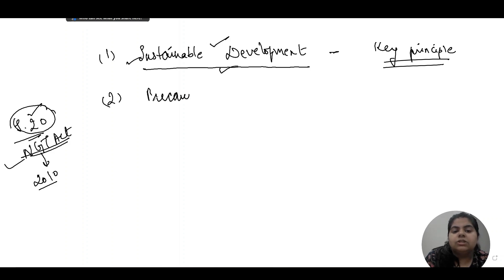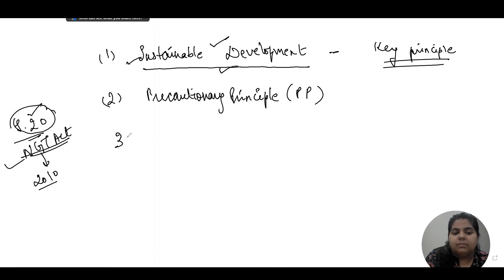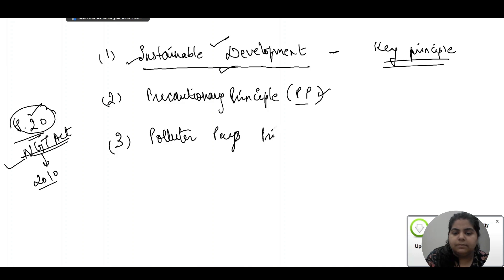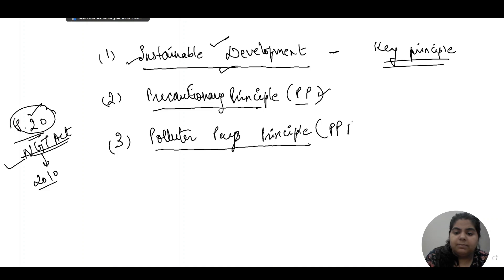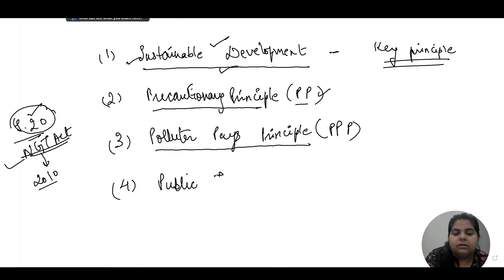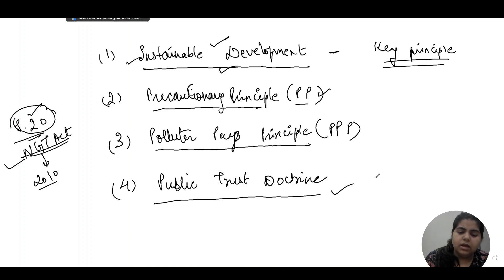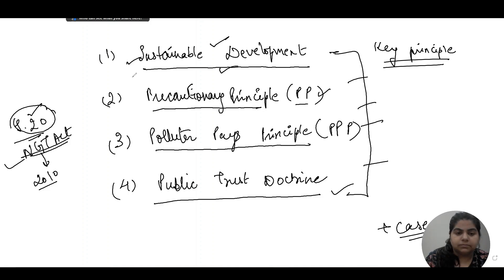After sustainable development, we will talk about the precautionary principle (PP), then the polluter pays principle, and finally the public trust doctrine (PTD). These four principles will be covered in this video, and in the next video we will discuss the cases through which these principles are applied in India.